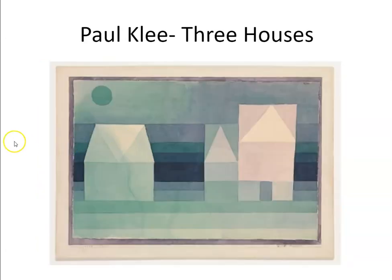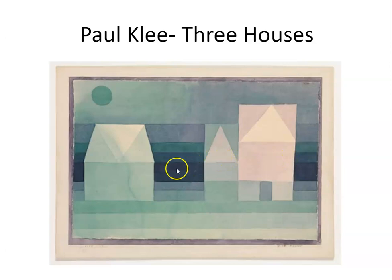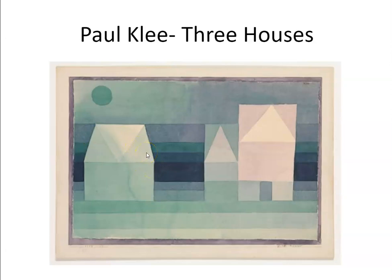We can also look at this one called the Three Houses — because guess what? There's one, two, three houses! It's so amazing! And again, these buildings are built up by different shapes, so there's three different triangles to build this roof. Same thing over here, same thing over here.